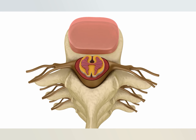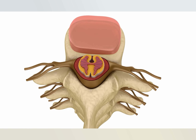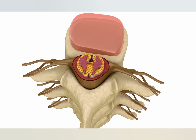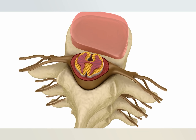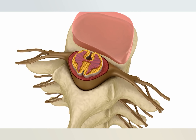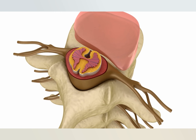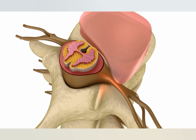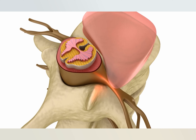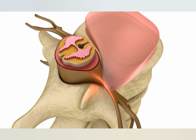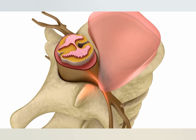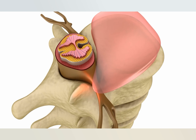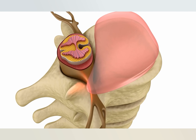Your spine is made of bones called vertebrae that protect your spinal cord, and they're stacked on top of one another with cushions or discs to help with compression and movement. Your spinal cord runs through a canal in the center of each of these vertebrae.